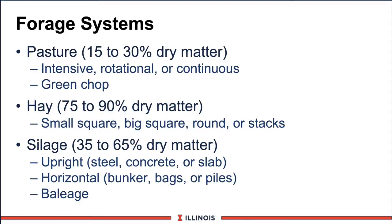Now let's look at our forage system. Generally, I will group them into three different categories. The first one is pasture. These feeds are extremely wet — 10 to 30% dry matter depending on stage of maturity and moisture conditions. On pastures, we can look at three different types of system. The most common and most popular is called intensive, in which we give a cow a 12 to 24-hour allocation of feed for that mob or group of cows. Our second system is rotational, where we have four to six to eight different areas where we rotate the cow every three to five days and allow the pasture to recover. Another one more common with growing heifers would be continuous, which means the animal has exposure to that feed for several days to several months, with very little chance for pastures to recover.